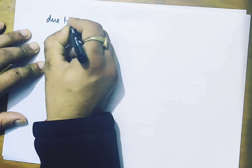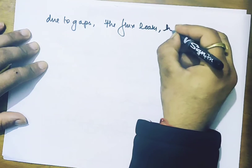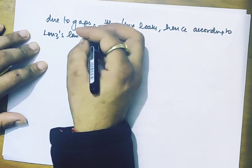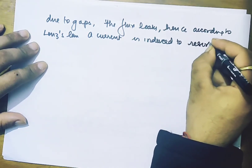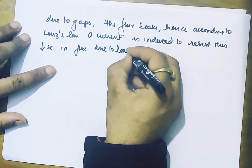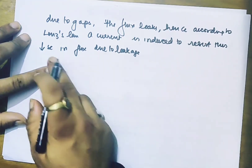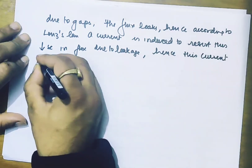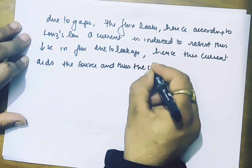Due to gaps, the flux leaks. Hence, according to Lenz's law, a current is induced to resist this decrease in flux due to leakage. This induced current aids the source current, and thus the total current in the circuit increases.